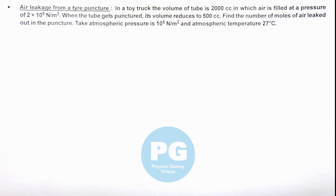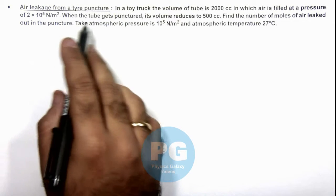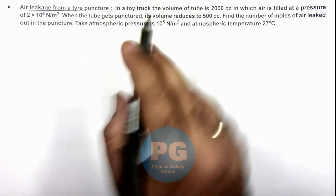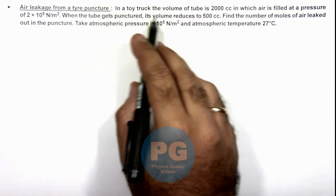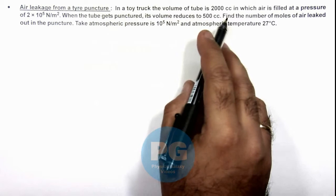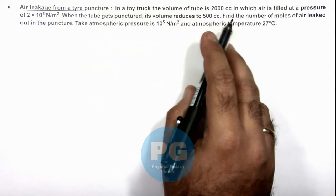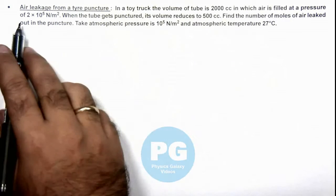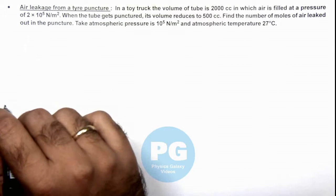In this illustration we'll analyze the air leakage from a tire puncture. Here we are given that in a toy truck the volume of tube is 2000 cubic centimeter in which air is filled at a pressure of 2×10^5 newton per meter square.